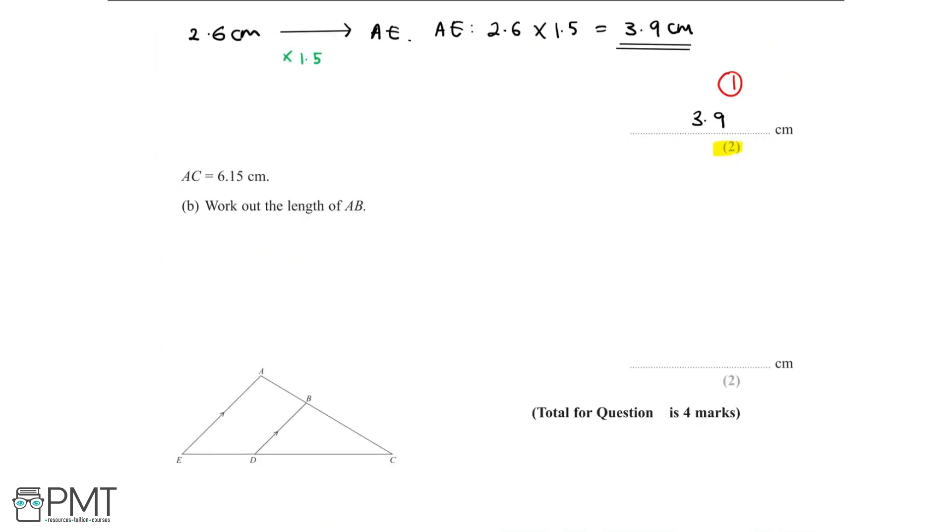Now in part B, we're told that length AC is 6.15cm, and we need to find the length AB. We can use the scale factor calculated in part A in order to calculate the length AB. We've included a small screenshot of the diagram for reference at the bottom.